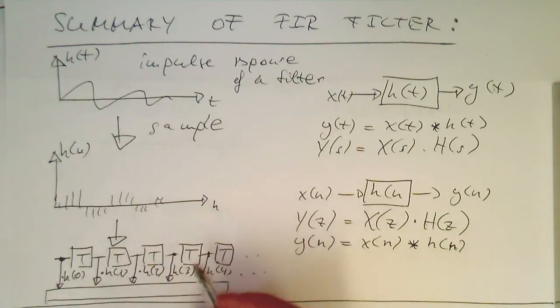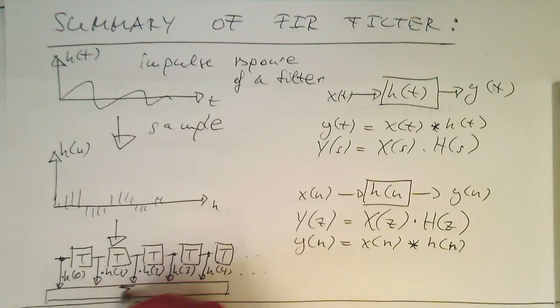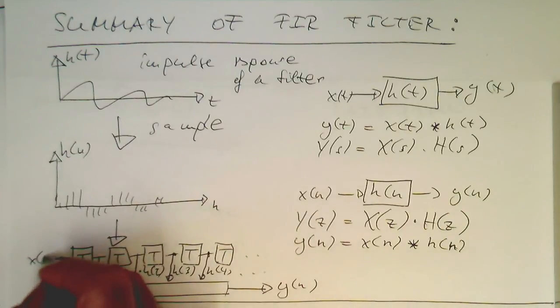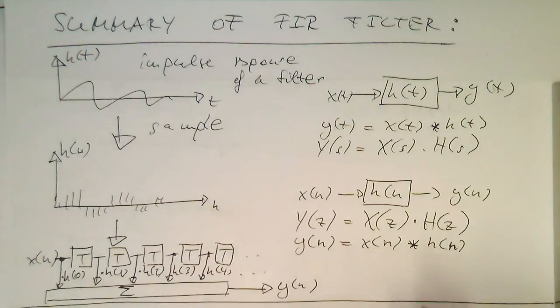And this is all summed up and generates our output Y. This is our input X. And this structure is called an FIR filter.